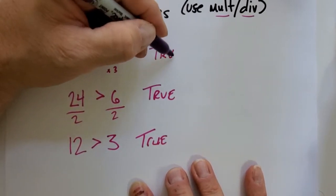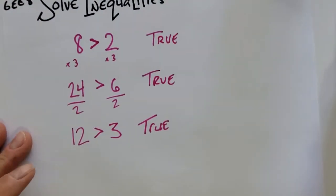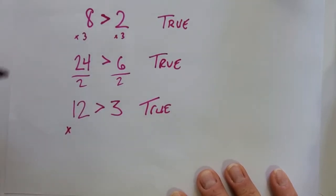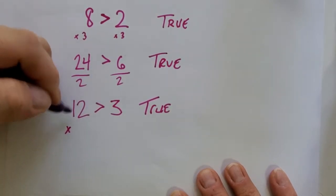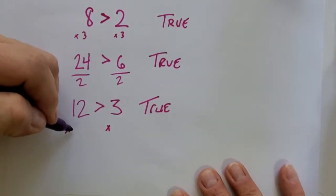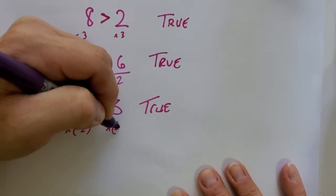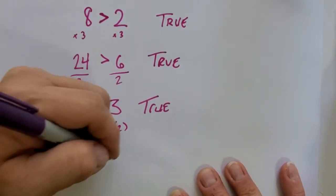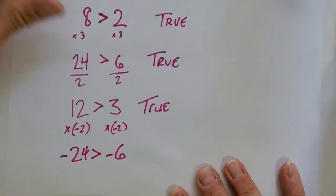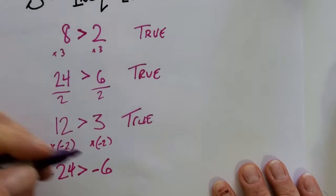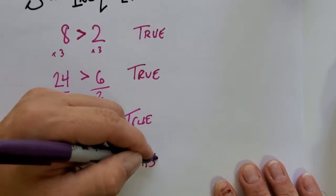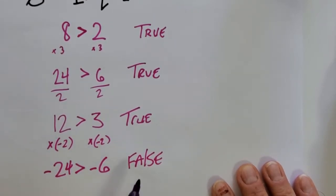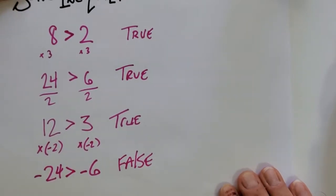So let's try now a different value. I'm a little concerned about maybe multiplying by negative. So let me take this entire inequality and multiply by negative 2. Let's see what happens. It's -24 > -6. Is negative 24 greater than negative 6? No, it's not. You cannot do this without it affecting the inequality.